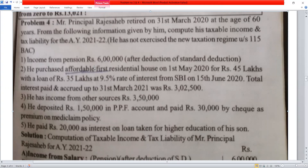First: income from pension. The principal retiree's pension is taken. Income from pension is taken after the deduction of standard deduction.